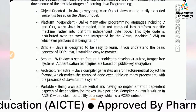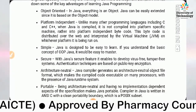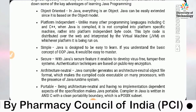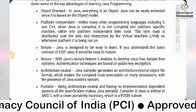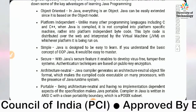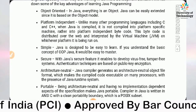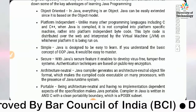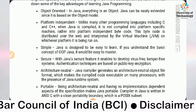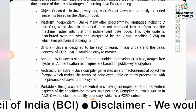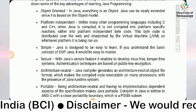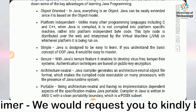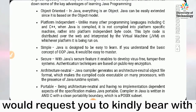Second is platform independence. Unlike many other programming languages including C and C++, when Java is compiled it is not compiled into platform-specific machine code; rather, it is compiled into a platform-independent bytecode. This bytecode is distributed over the web and interpreted by the JVM — Java Virtual Machine — on whichever platform it is being run.